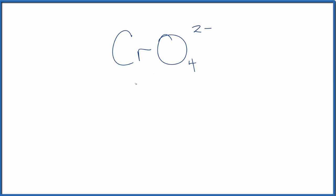In this video, we'll write the Lewis structure for CrO4²⁻. This is called the chromate ion.